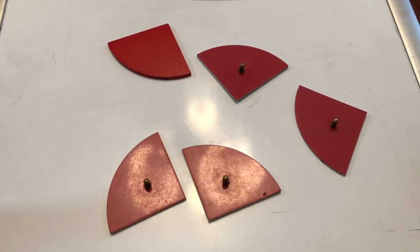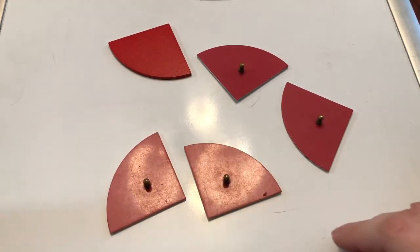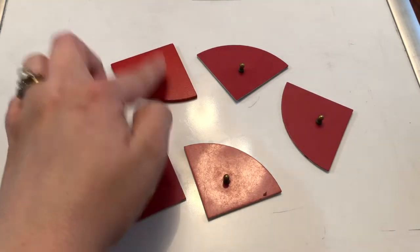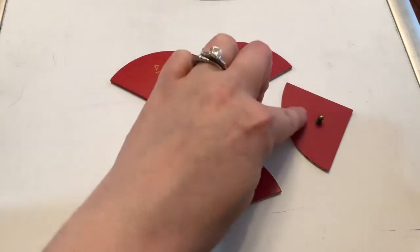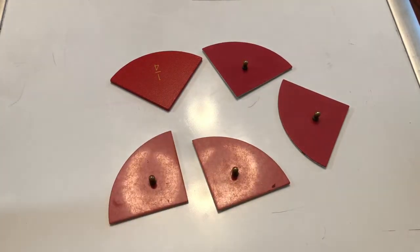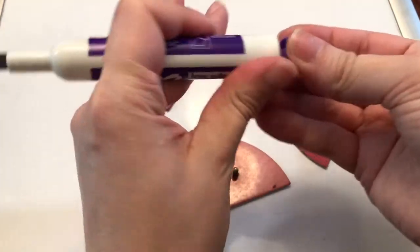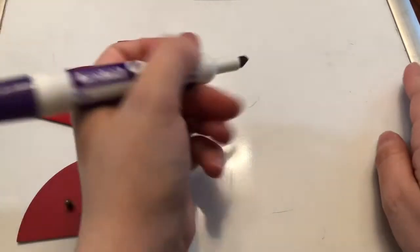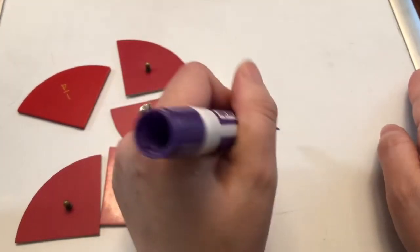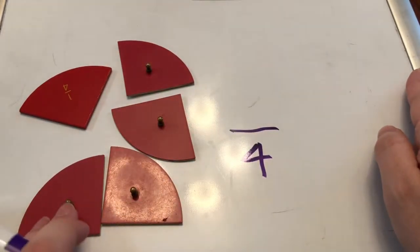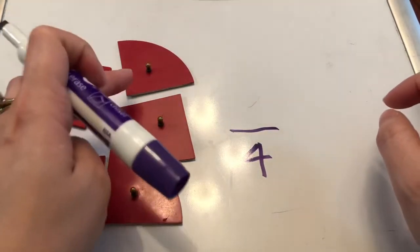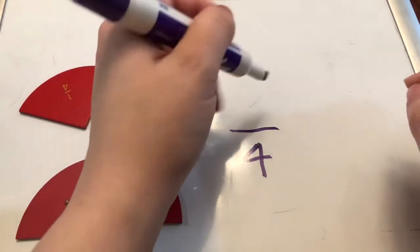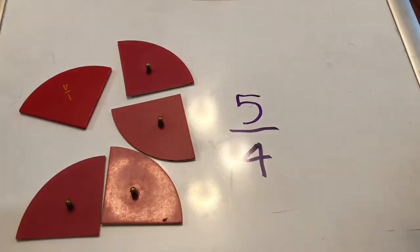Today we're going to talk about improper fractions and mixed numbers. Here I have some fourths. Let's see how many fourths I have. I have one, two, three, four, five. I have five fourths. My denominator is going to be four because that's the fraction family I have, and the numerator is going to be the number of fourths that are present, which in this case is five. Five fourths.